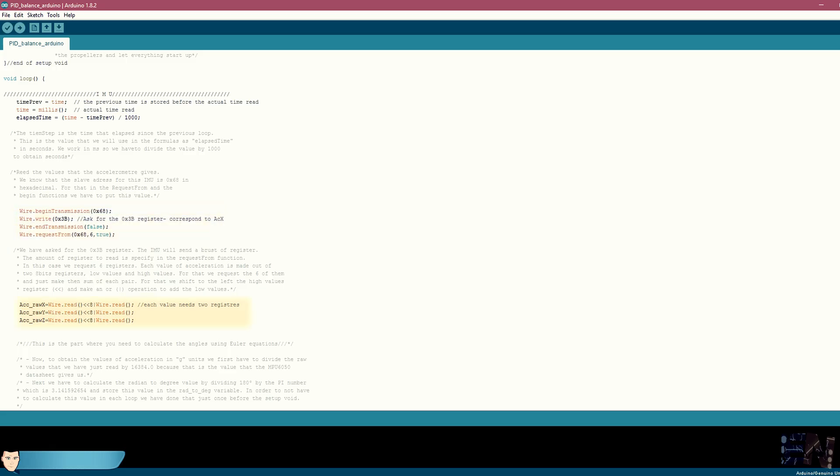Since each value for each axis is divided in two 8-bit registers, we ask for 6 registers. Once we receive those 6 registers, we combine the high and low part of each in order to obtain the x, y and z accelerations.